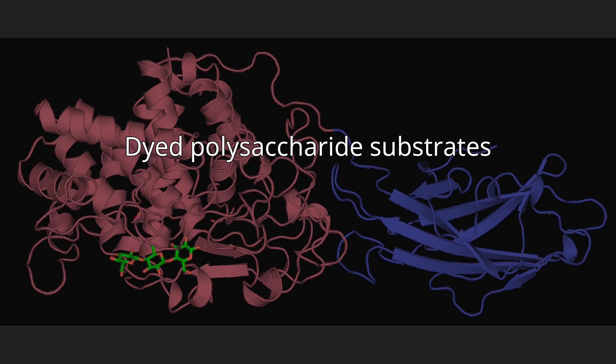Dyed polysaccharide substrates can be subdivided into two classes. Insoluble chromogenic substrates: an insoluble cellulase substrate such as Azo-HE-cellulose absorbs water to create gelatinous particles when placed in solution. This substrate is gradually depolymerized and solubilized by the action of cellulase. The reaction is terminated by adding an alkaline solution to stop enzyme activity, and the reaction slurry is filtered or centrifuged. The color in the filtrate or supernatant is measured and can be related to enzyme activity.